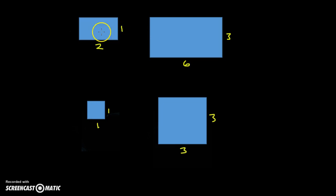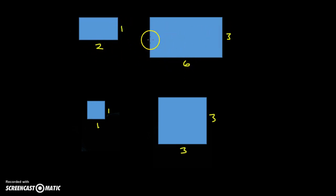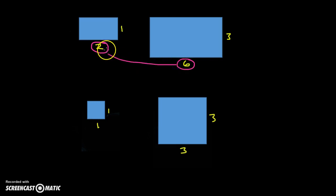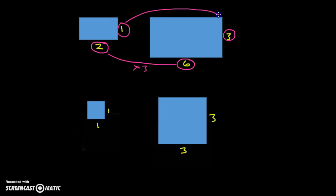We've got two rectangles up here and these are similar. Hopefully you remember similar shapes are shapes where one is an enlargement of the other. So in other words, corresponding lengths have been enlarged by the same amount, or the same scale factor we might call it. So if we take corresponding lengths here, what do we have to multiply the two by to get six? We multiply it by three. So that length has been enlarged by three from the original shape. The corresponding lengths have been enlarged by the same scale factor.